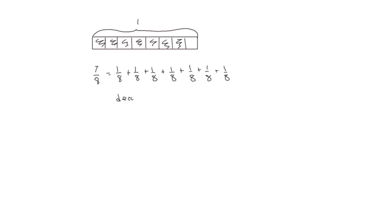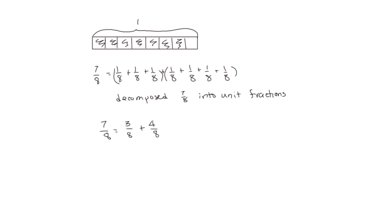So this would show 7 eighths as the sum of unit fractions — we have decomposed 7 eighths into unit fractions. Now there are other ways we could decompose 7 eighths. We could group together 3 eighths and 4 eighths, and 3 eighths plus 4 eighths would equal 7 eighths. We could also do 2 eighths plus 5 eighths. There are many different ways, but the important thing is that they all add up to our total of 7 eighths.